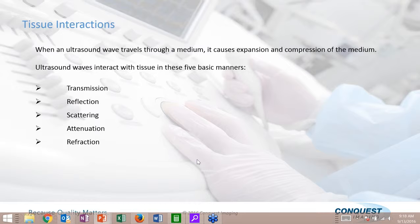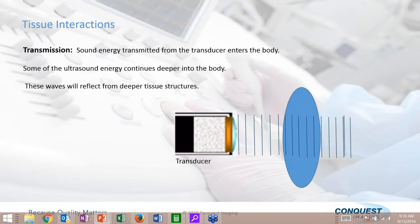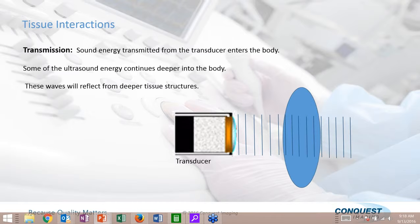There are five different tissue interactions when we send sound into the human body: transmission, reflection, scattering, attenuation, and refraction. Transmission is important — when we send sound into the body, we want it to both reflect off structures and transmit through them. Otherwise, we would only see the first layer of tissue. We want to see what's at one millimeter and also what's at 24 centimeters, so transmission is critical. Reflection is also critical — sound beams must reflect back to the transducer to vibrate those crystals so the system can assign shades of gray.